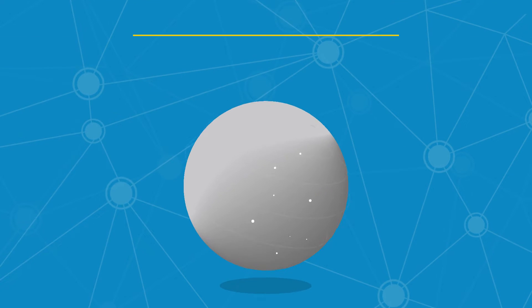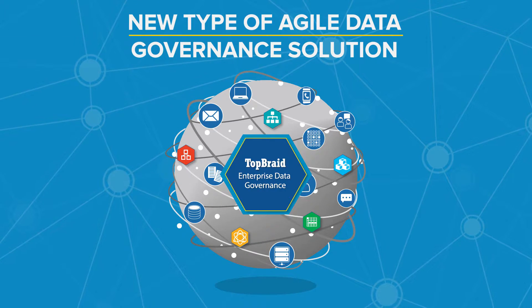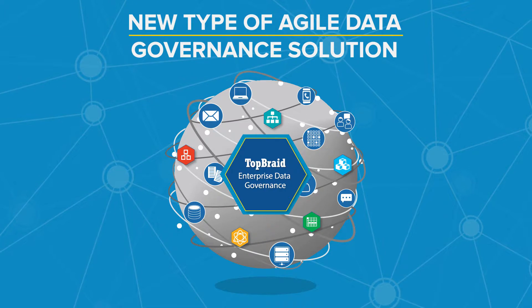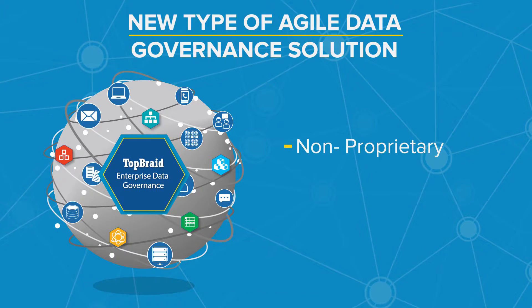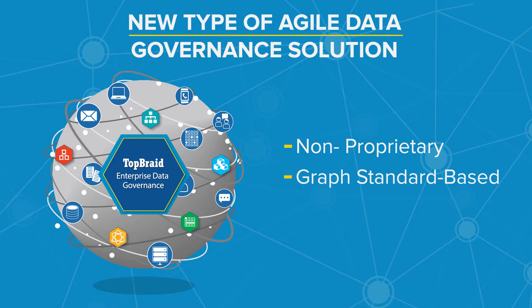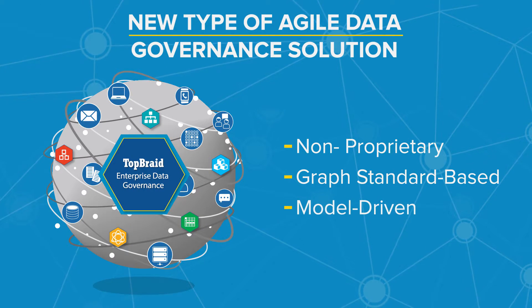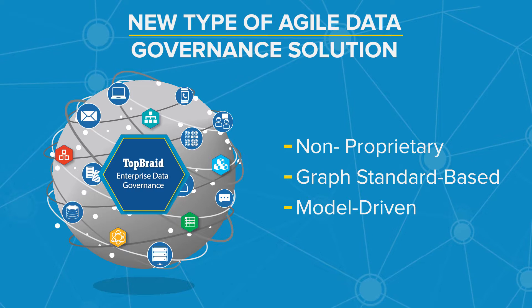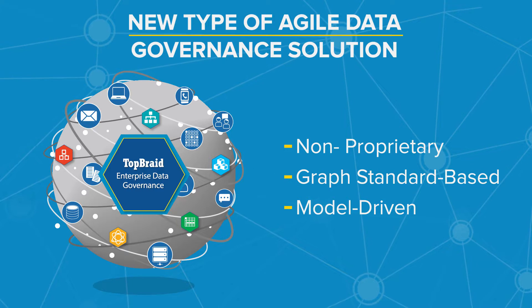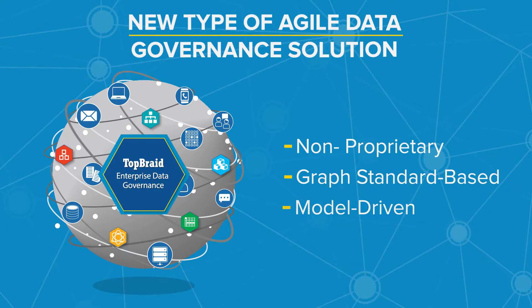TopBraid Enterprise Data Governance is a new type of agile data governance solution. It uses a non-proprietary, graph standards-based, model-driven approach to represent the meaning of data — something we call semantic information management.